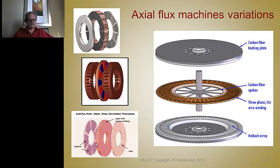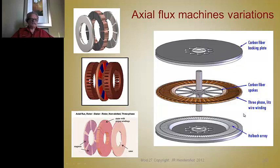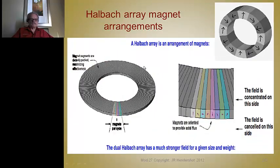Here is another rotor-stator-rotor version, and here is a stator-rotor-stator version with two stators. The stator-rotor-stator is the easiest to cool — heat can be removed from the back easily. The rotor-stator-rotor version also cools reasonably well because the end turns go over the OD and can contact an aluminum housing. Here is what the Halbach array looks like.